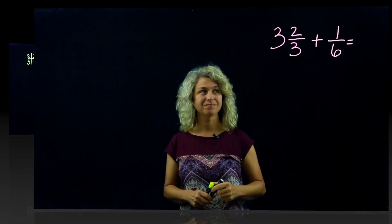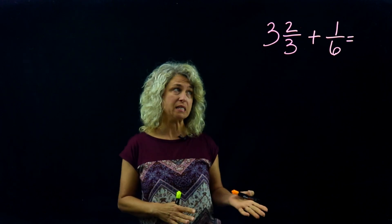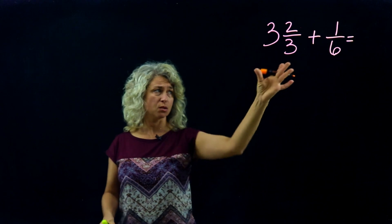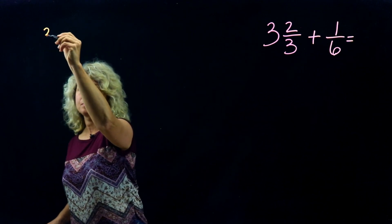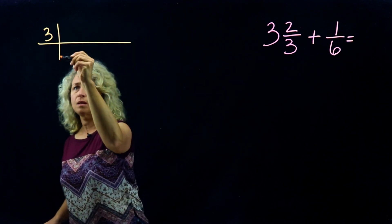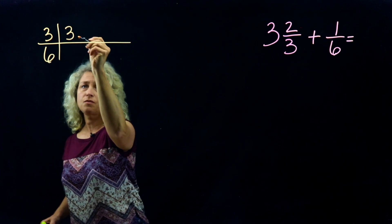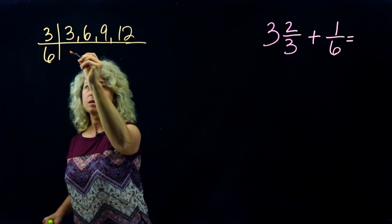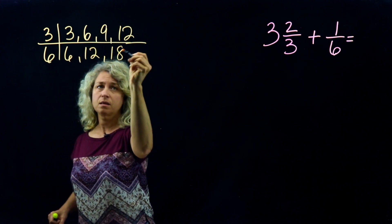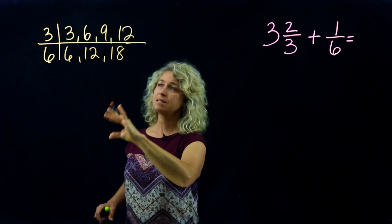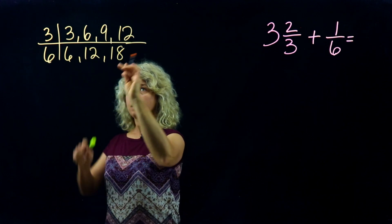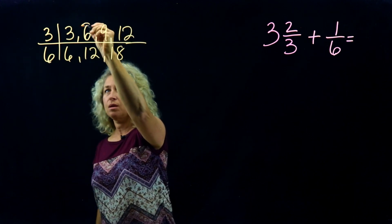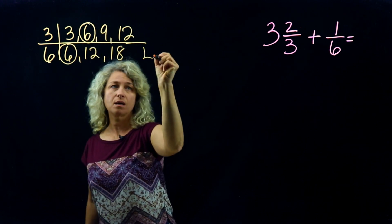Okay, so our last example, we have a mixed number plus a fraction. So look at 3 and 6, and we'll skip count just a few. 3, 6, 9, 12. 6, 12, 18. So look for your least number that is in common. Now although the 12s are in common, it's not the least number. 6 is your LCM.